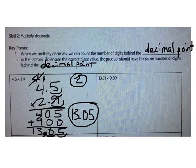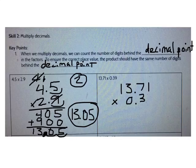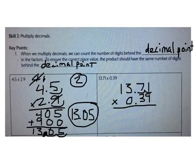Let's do another one. What's 13 and 71 hundredths times 39 hundredths? First, how many digits are going to be behind the decimal point in my answer? Well, there's one, two, three, four.